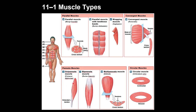Unipennate muscles have fibers on only one side — an example is a muscle in the forearm. Bipennate muscles have fibers coming from two sides, found in the thigh area. Multipennate muscles have fibers from multiple areas; an example is the deltoid shoulder muscle. The last type is circular muscle, which covers the openings of body parts like the mouth, eyes, anal, and genital areas.